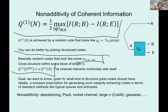Our goal is: given a channel, what kind of code should I use to achieve capacity, and what does the structure need to look like? Ideally we'd have a compact prescription for generating capacity-achieving codes using standard methods like typical spaces and entropies. Non-additivity of coherent information is fairly generic — with fairly high noise channels you tend to see non-additivity, and there are many examples of this by now.